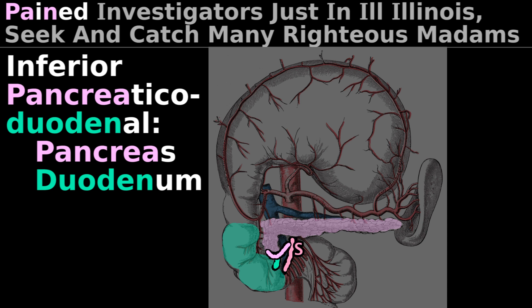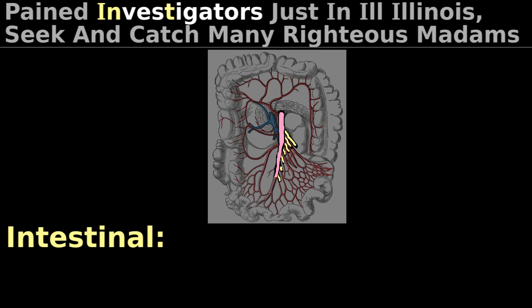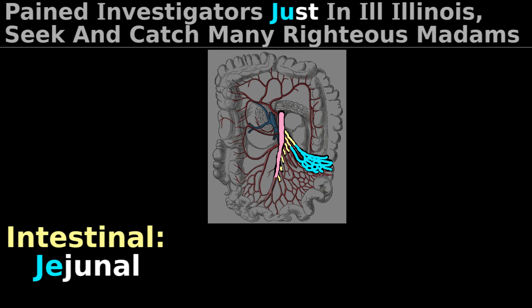Pancreaticoduodenal has been covered earlier in this tutorial because it is not complicated further. The intestinal branches go to the small intestine, which can be specified as a jejunal branch going to the jejunum of the small intestine, or an ileal branch which goes to the ileum of the small intestine.